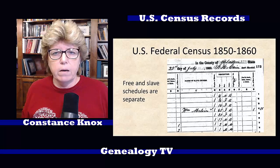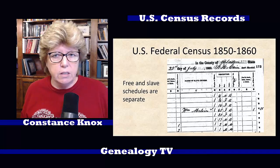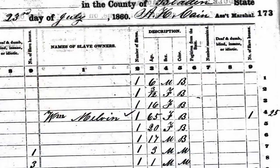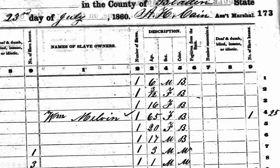Also keep in mind that free and slave schedules were separated between 1850 and 1860. This is an example of a slave schedule. In this case, the name of the slave owner is William Melvin. Number of slaves is one. Age is 65, sex is female, color is black, number of slave houses is one. But if you'll notice, there are no names for any of these slaves — they're just left blank. So here we have one 20-year-old female who is black, one 17-year-old male who is black, one 3-year-old male who is mulatto, and one 1-year-old male who is mulatto.